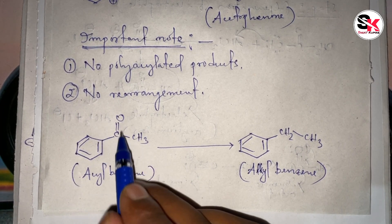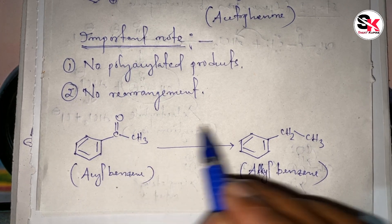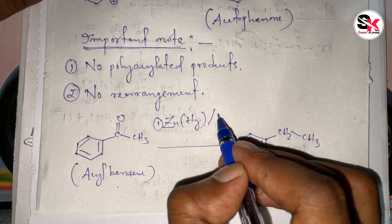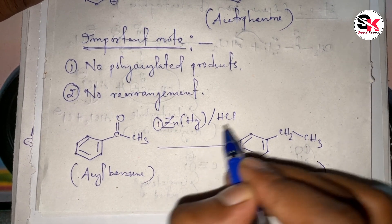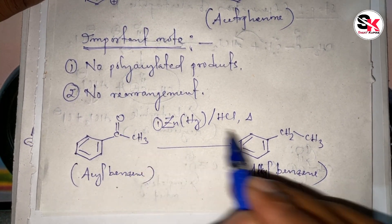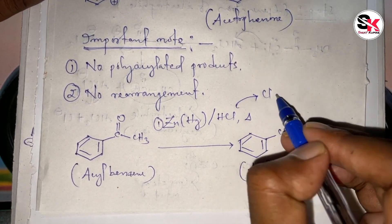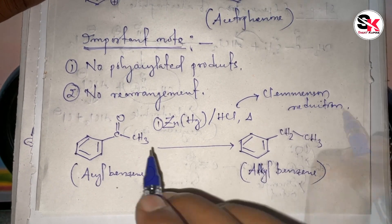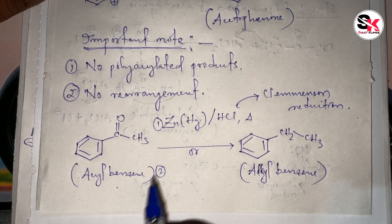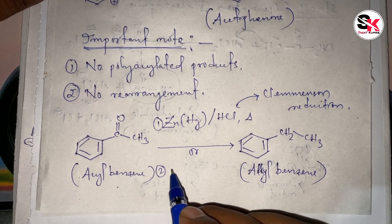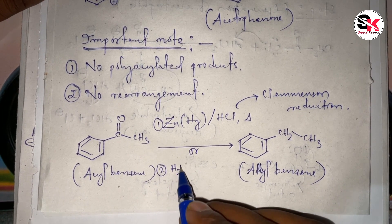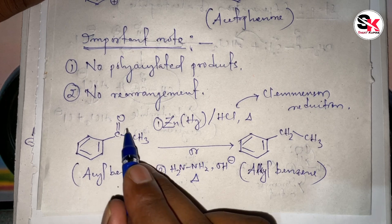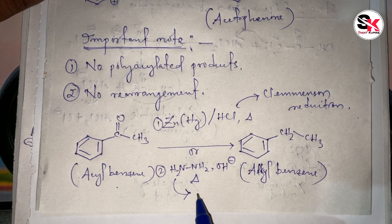If you want to convert acyl benzene formed in this reaction to alkyl benzene, you need to reduce the ketone group. One method is Clemmensen reduction: when the ketone reacts with zinc-mercury amalgam in presence of HCl and heat, the ketone group is converted to a methylene group. Alternatively, you can use Wolff-Kishner reduction: when the ketone reacts with hydrazine (NH2-NH2) in presence of a strong base and heat, the ketone group is similarly reduced.